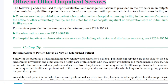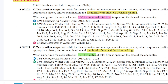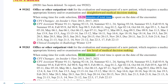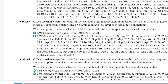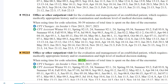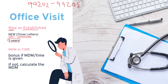For your office visit, you use MDM or time. Codes 99202 through 99205 fall under the new patient category. You check the MDM or time and compare against those codes. If the MDM or time is given directly, that's a bonus — if not, you have to calculate the MDM. Codes 99211 through 99215 are for established patients. We'll discuss MDM calculation in the next episode.